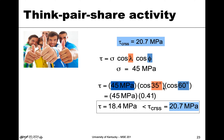If you got these angles flipped, it wouldn't actually matter, just as a point of reference. So if we plug all that in, making sure to have the correct units for cosine when we punch that into our calculator, we get 45 times the cosine factors, which give us 0.41. That gives us a resolved shear stress of 18.4 megapascals.